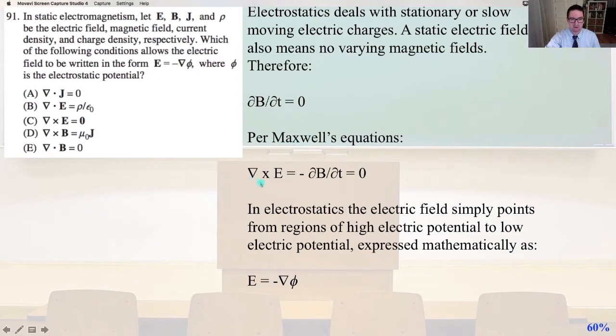del times the cross product of E, the electric field, equals negative partial of B divided by partial of T. And again, here, that has to equal zero, C.